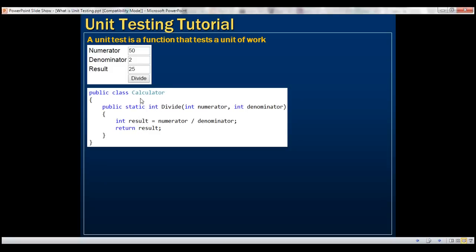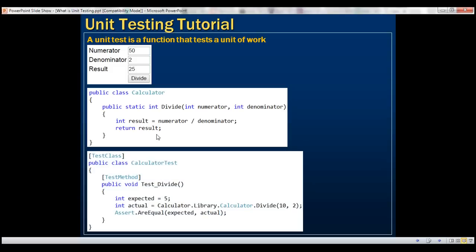So the unit of work right here is to divide two numbers and return the quotient. To test this unit of work, I have another function here. I named it test_divide. In real-world applications we follow different naming conventions to name our unit tests. We'll talk about those naming conventions in detail in a later video.